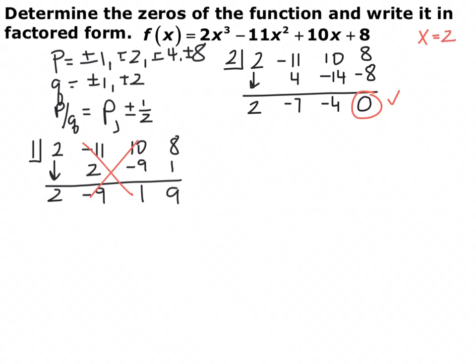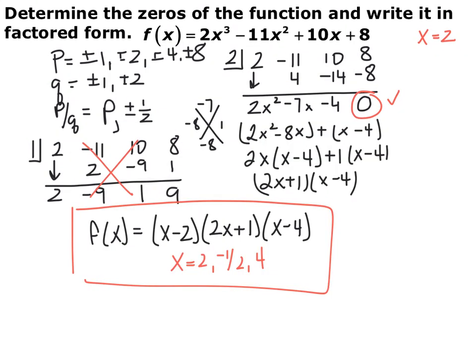At this point you have two options: continue synthetic division, or recognize you're now at a quadratic — 2x squared minus 7x minus 4 — and just factor it normally. Factoring this quadratic gives 2x plus 1 times x minus 4. So the entire factored form of the cubic is x minus 2 times 2x plus 1 times x minus 4, and our zeros are x equals 2, negative one-half, and 4.